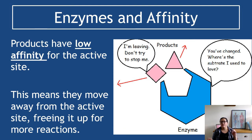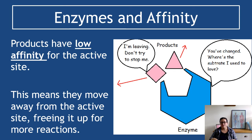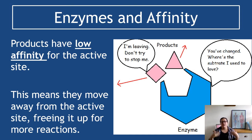Products have low affinity for the active site. This causes them to leave the active site after the reaction is done, which frees up the active site for more reactions. Substrates have high affinity, making it more likely that they will bind and react. Products have low affinity, which clears them out of the way of the active site, allowing the enzyme to carry out more reactions.